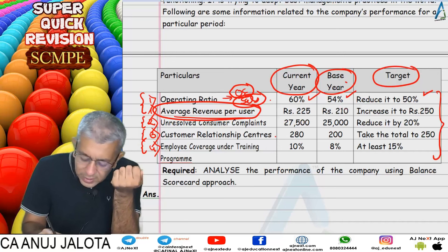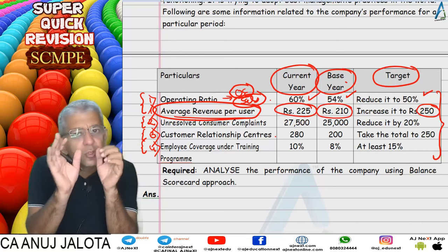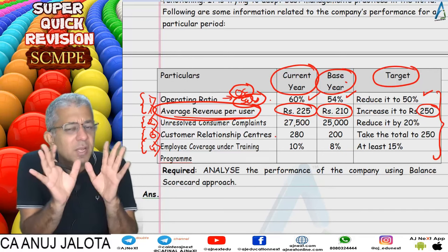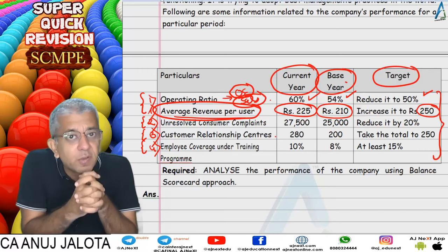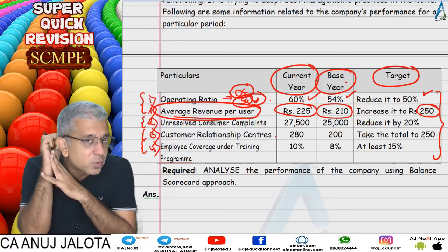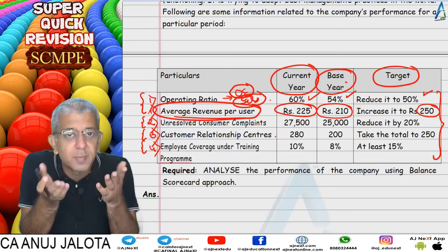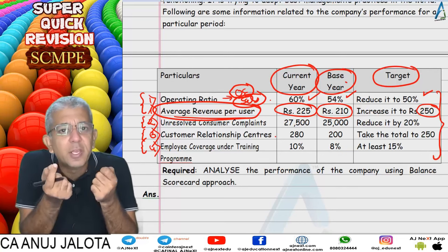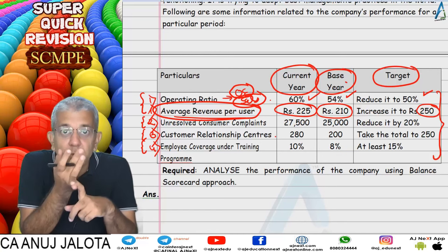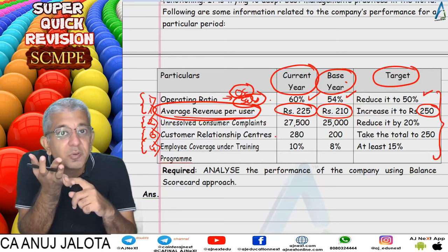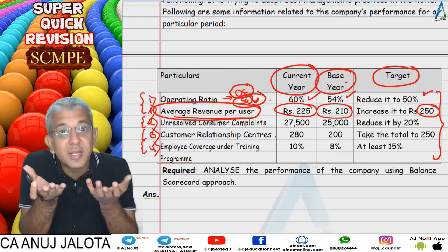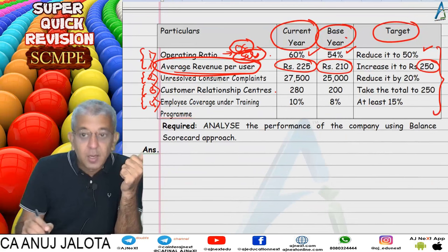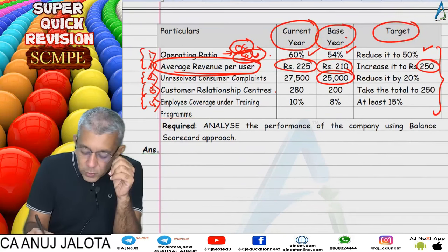Average revenue per user: last year it was 210, target was 250, we managed to reach 225 — okay but not great. Advice: try to increase average revenue per user by increasing the selling price, but if we do that, demand may fall and customers may switch to other operators. Instead, introduce more value-added services and charge for them. For example, Jio started as a mobile phone company and now has Jio Fiber, charging customers for that and increasing average revenue per user.